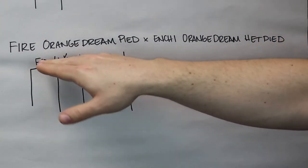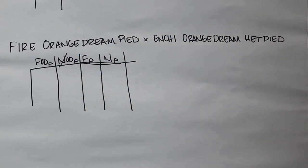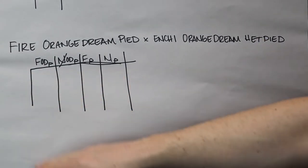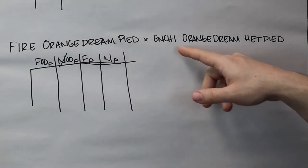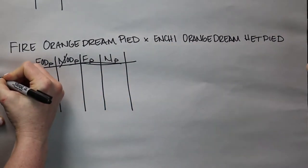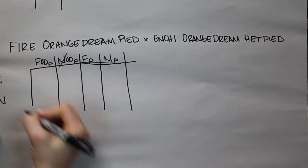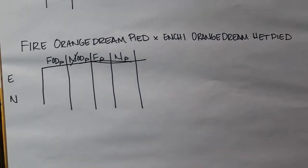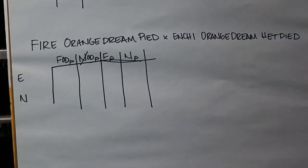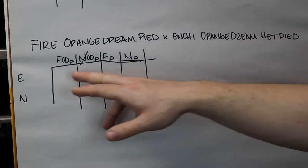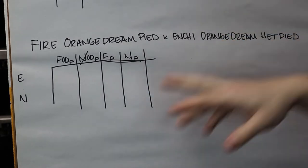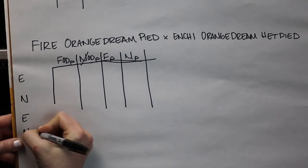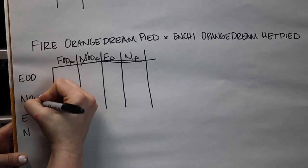The hard part is when you have a codom, because you get two options out of it, you have to double the number of boxes you have. Basically take whatever you already have written down, duplicate it again, and apply that codom to half the animals — because when you breed a codom, half the animals get it. Over here on the side, we have the enchi. If you breed an enchi to a normal, you can either get an 'E' or an 'N.' Then orange dream — same thing we did on top: we have to duplicate our options. 'E' and 'N' again, and half of those get orange dream.